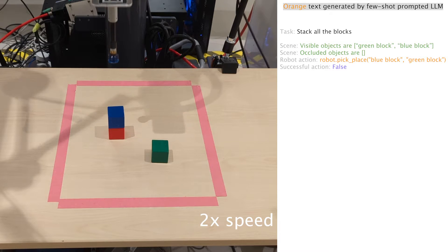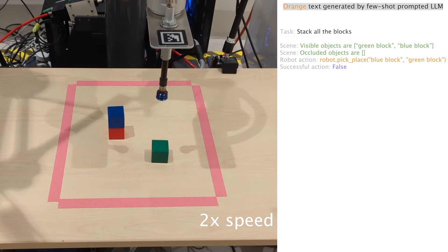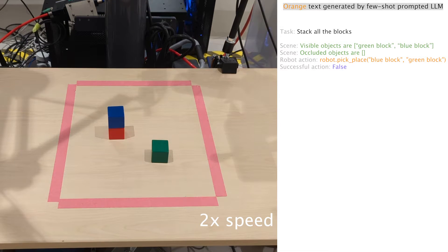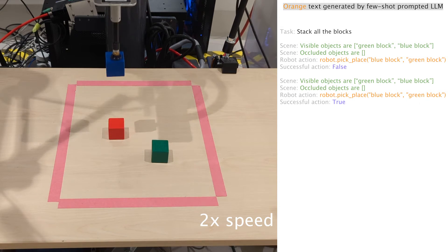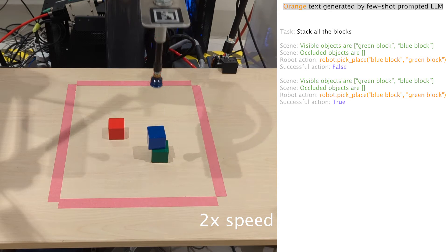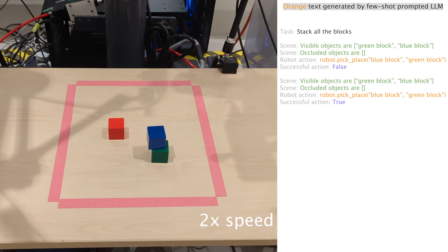Here in the real-world tabletop setup, the task is to stack all the blocks when two blocks are already stacked. This time, the planner recognized the policy failure during the first step and the third step, and it was able to issue a retry.